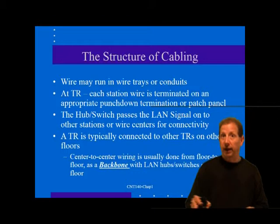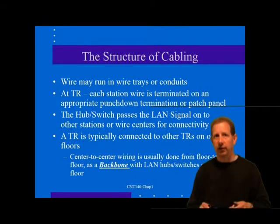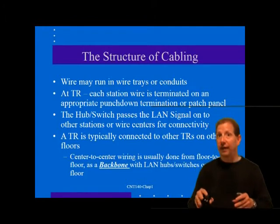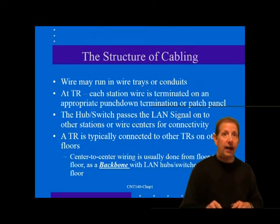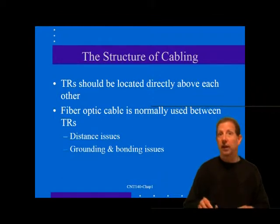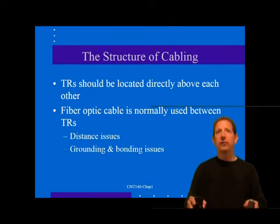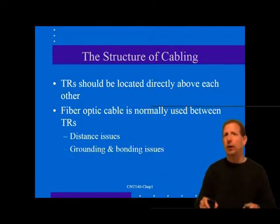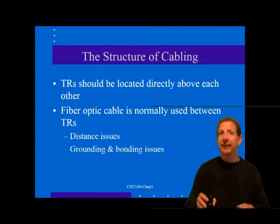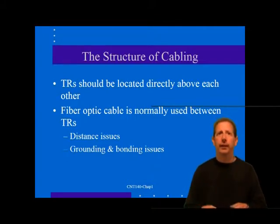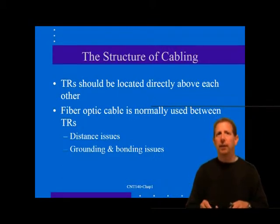In the telecommunications room, network devices such as a hub or concentrator are connected to each station cable. The hub passes LAN signals to other stations or wire centers for ultimate connectivity. A TR is typically connected to TRs on other floors via backbone wiring, floor to floor. In some cases it may be more effective to concentrate TRs on several floors into a single backbone concentrator. Fiber optic cable is sometimes a good choice for wiring between TRs, eliminating grounding and bonding concerns and allowing longer runs than copper.